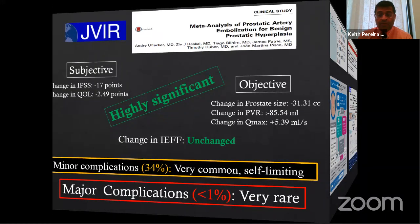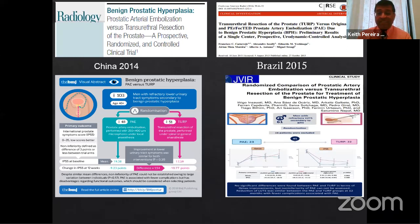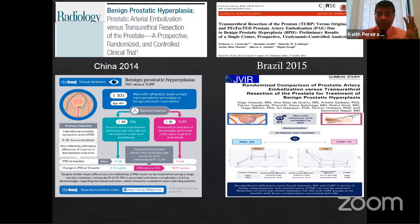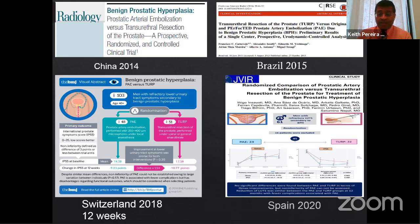Major complications are less than 1% and are almost described only in case reports — that's how rare they are. Looking at more data: we have randomized controlled trials, which represent the best level-one evidence. There's a Chinese trial from 2014, a Brazilian trial from 2015 — both IR-run trials. In 2018, a combined urologist and interventional radiologist trial was published in the British Medical Journal, which is not an IR journal, so it's considered unbiased. It had 12-week follow-up.